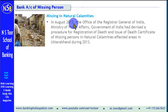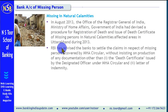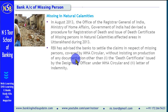In August 2013, the Office of Registrar General of India under the Ministry of Home Affairs, Government of India, devised a procedure related to registration of death and issue of death certificate in respect of those persons who are missing in natural calamity-affected areas in Uttarakhand. RBI has advised banks that they can settle claims covered by the MHA circular, and for this purpose, banks need not ask for any documentation other than the death certificate issued by the designated officer and a letter of administration.